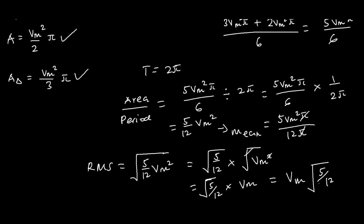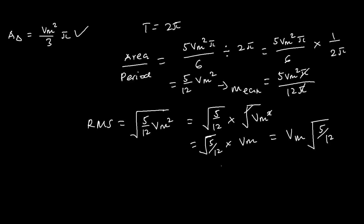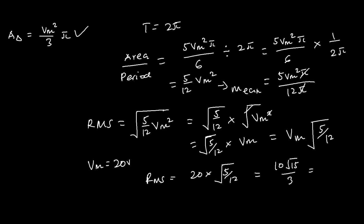So the RMS value for this waveform is Vm × √(5/12). For example, if Vm = 20 volts, then RMS = 20 × √(5/12), which equals approximately 12.9 volts. That's all for this video — thank you very much for watching. Please don't forget to like and subscribe.